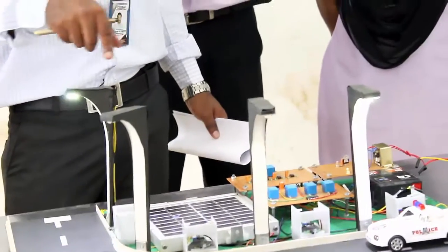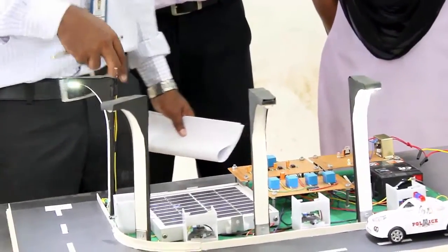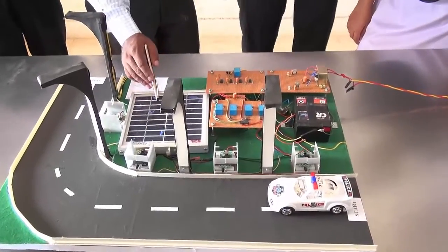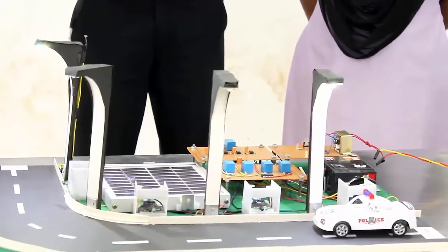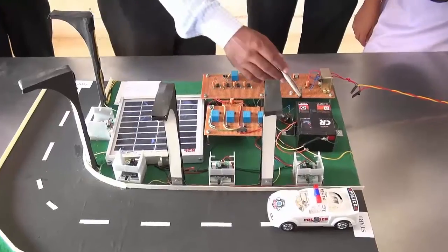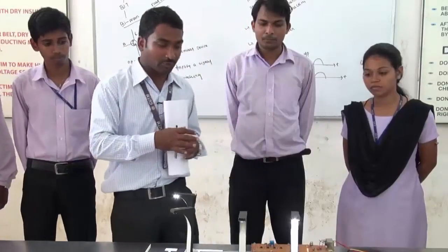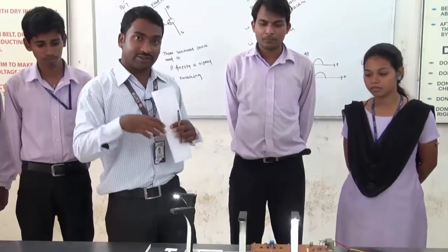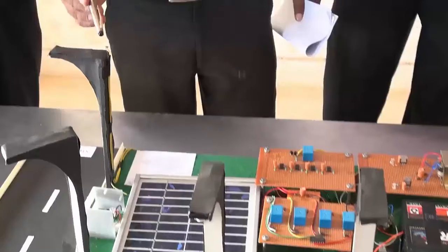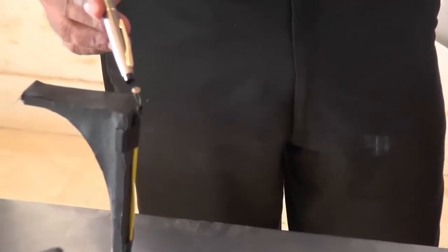These street lights are not using grid electricity — they are using solar electricity. Here one solar panel is present; it will accumulate solar electric charge and store it inside a battery for use at evening time.